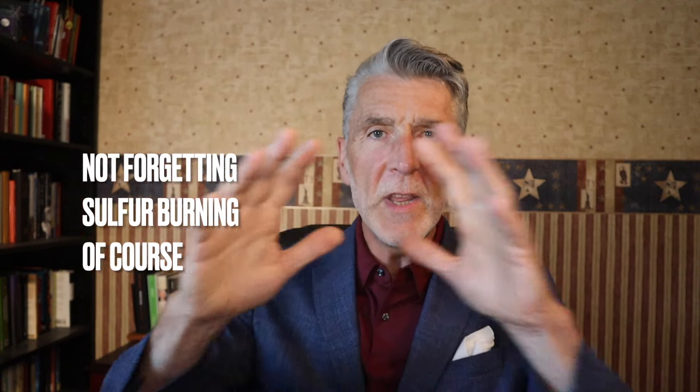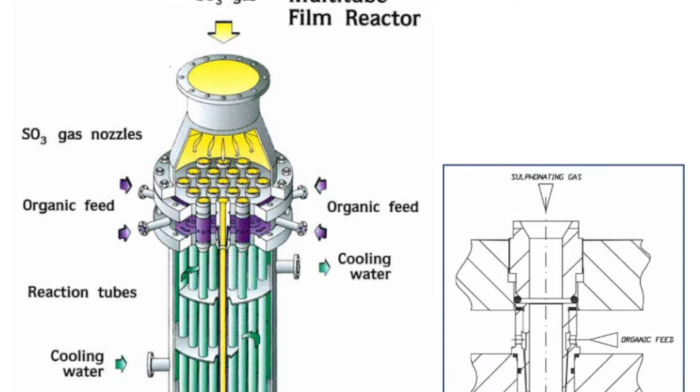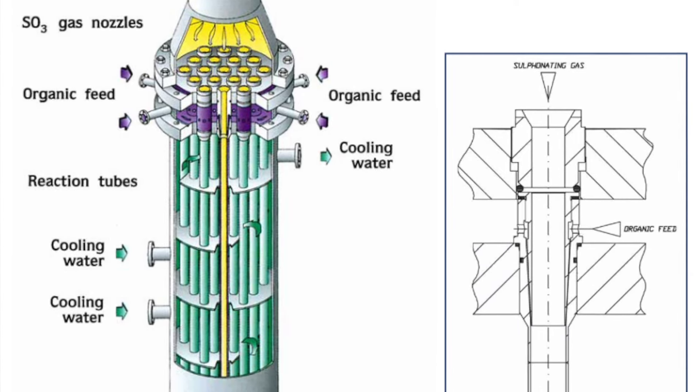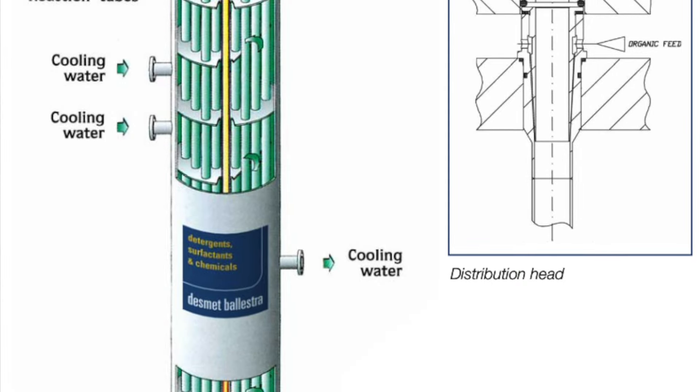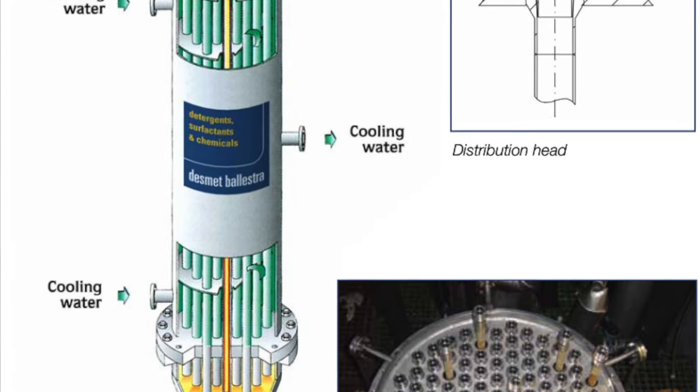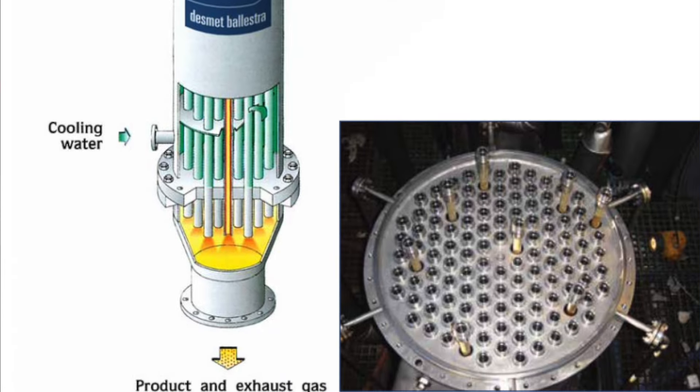So you've got sulfur storage, process air drying, the reaction itself, and then downstream post-treatment after the reaction, which could include neutralization, dioxane removal, exhaust gas treatment, and drying if dry products are needed. The core of the system is the sulfonation reactor, the so-called falling film reactor, and we've got a diagram here in terms of just graphically how it works.